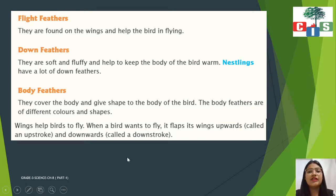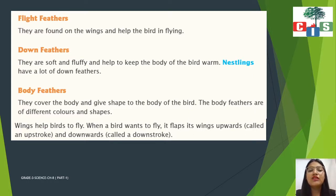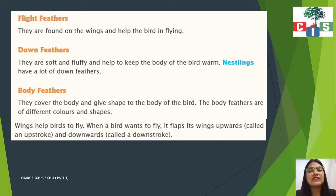Now we will study about down feathers. They are soft and fluffy and help to keep the body of the bird warm. Down feathers are used to maintain the temperature of the bird's body. Nestlings, which are baby birds, have a lot of down feathers.